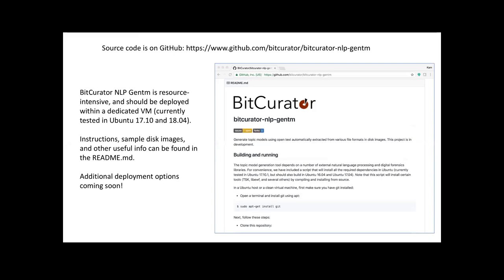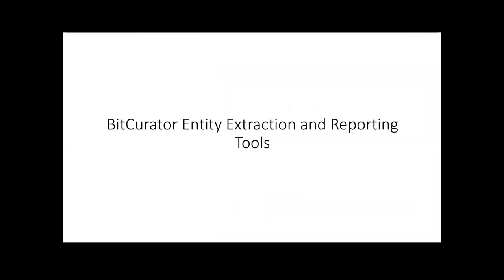The source code for this tool set is on GitHub — you can find it under bitcurator/bitcurator-nlp-gentm. This tool set currently needs to be built inside a dedicated VM due to some limitations of how GraphLab displays this data, but we'll be working on improving that in the future as well. And then finally, we have a set of tools for entity extraction and reporting. This is a tool set we started working on at the beginning of the project and shifted away from for a while to focus on improving the Access Web Tools and the topic model generation tools. We're returning to this now and hoping to have improved versions available over the next couple of months as well.